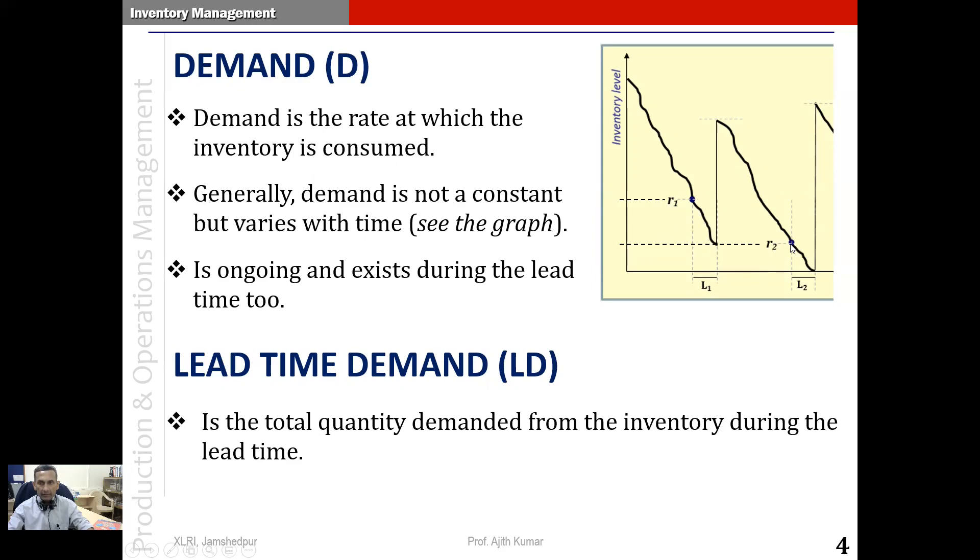Similarly, in the second cycle, we see that the amount of inventory consumed during the lead time is indicated by this level, which happens to be in this case, the same as R2. So R2 is the lead time demand in the second cycle. Because the level of inventory when the lead time began was R2. And the level of inventory when the lead time ends is zero.